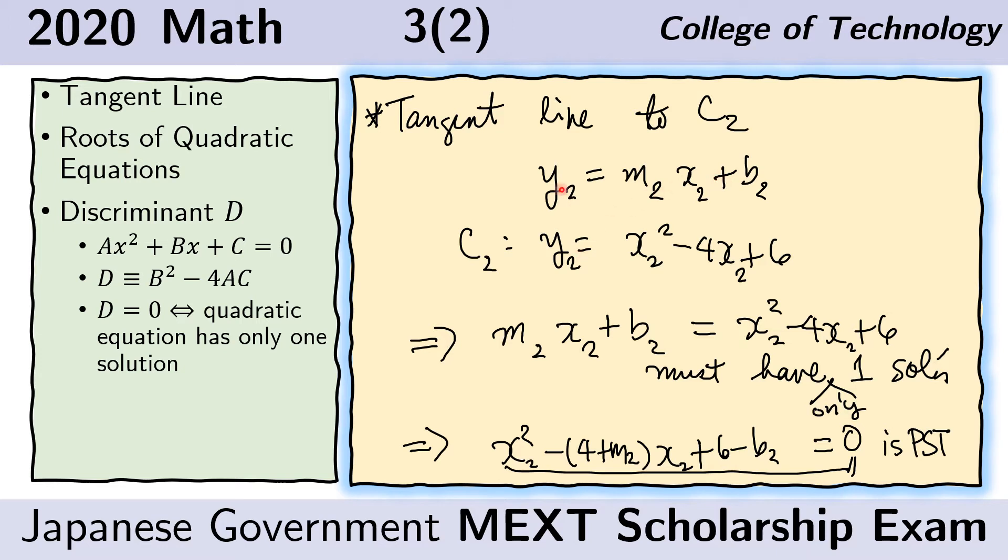And that means that the y's must be equal at that point of intersection and so we equate them. Here, y equals this, here y equals this, and so we get this equation. We rearrange the terms so that we get this equation here. Again, we note that because this is a tangent line, then this quadratic equation must have only one solution.